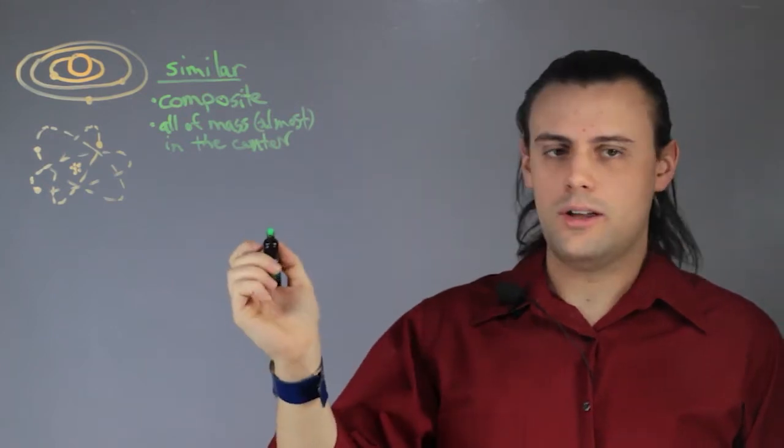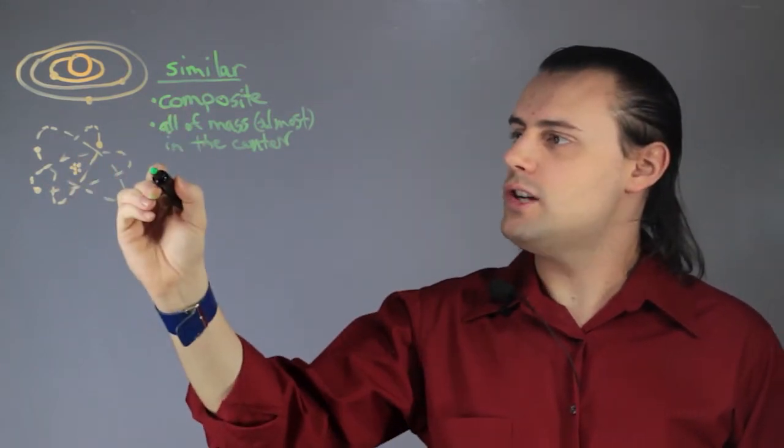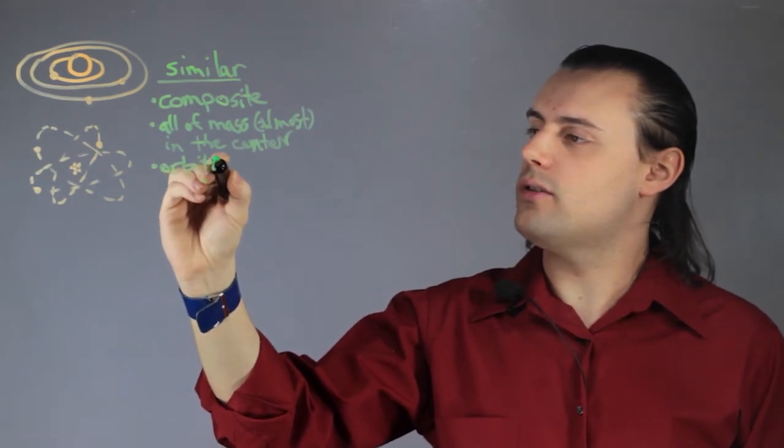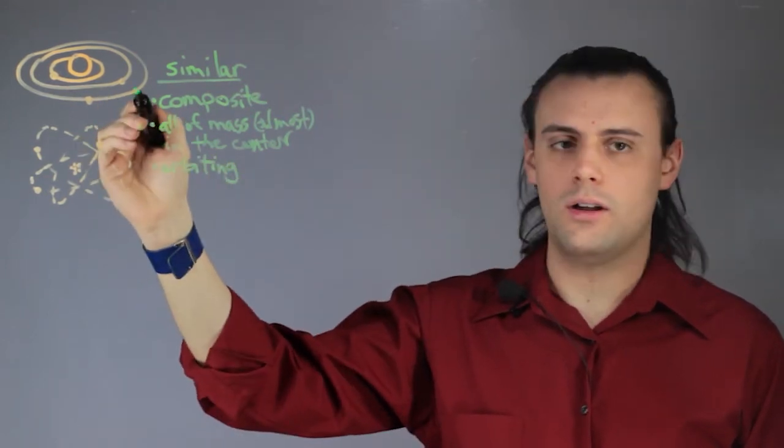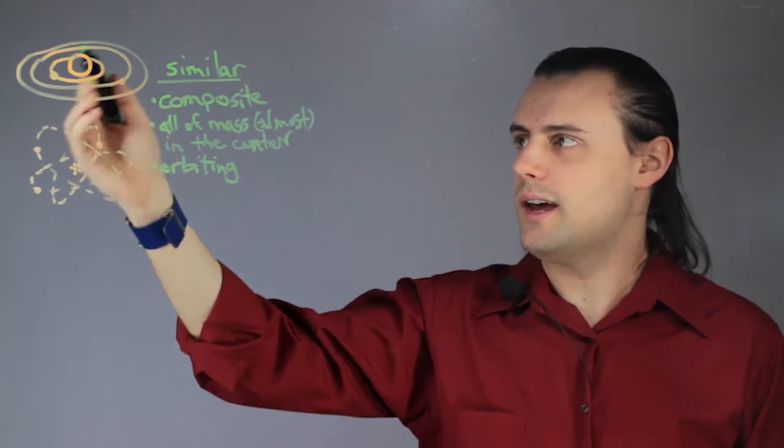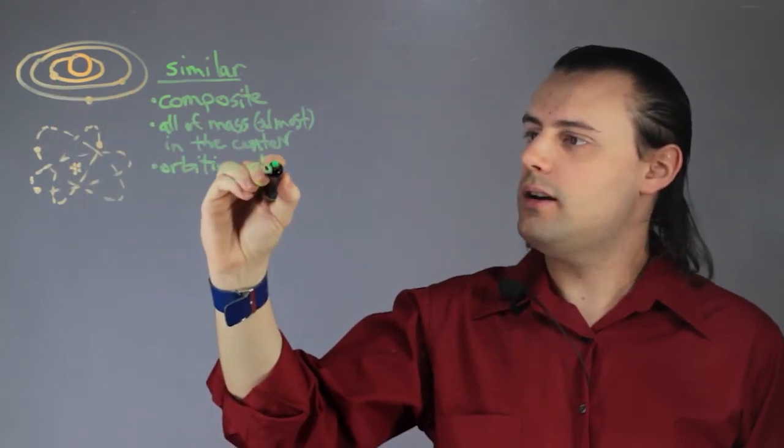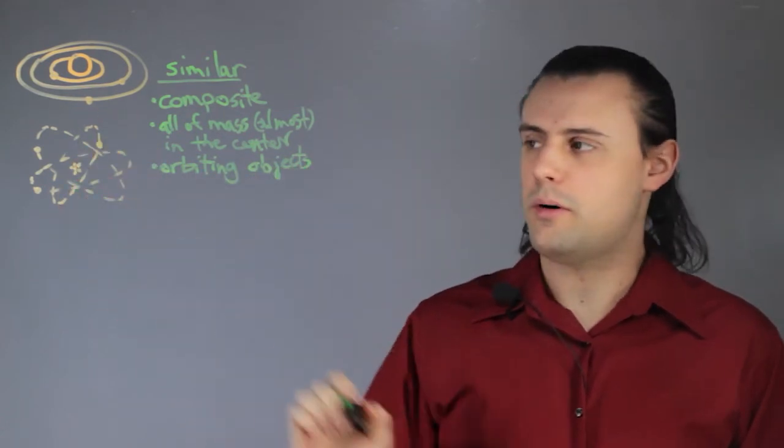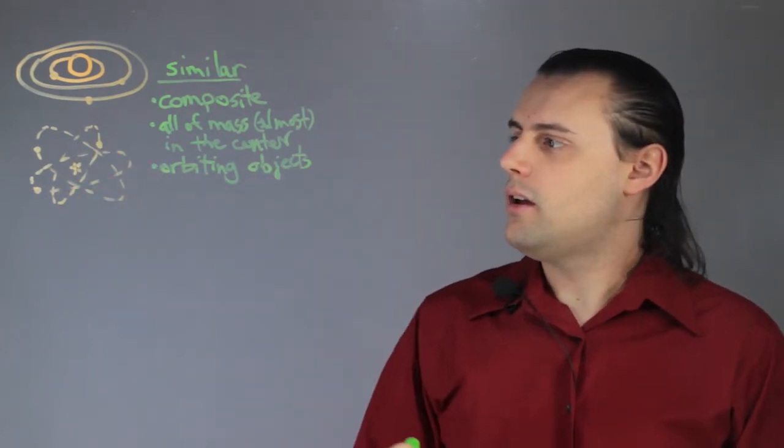And another similarity is that they both have orbiting objects. So in the case of the solar system they're called planets, or more generally just satellites, and in the case of the atom they're called electrons, these fundamental particles.